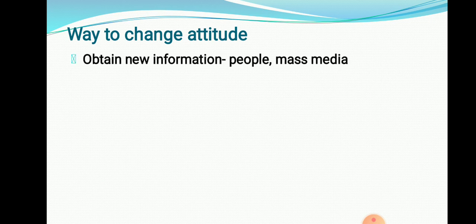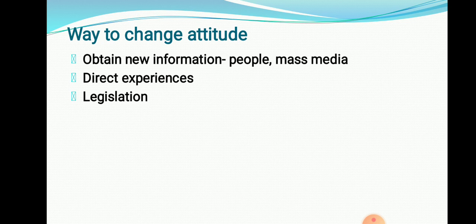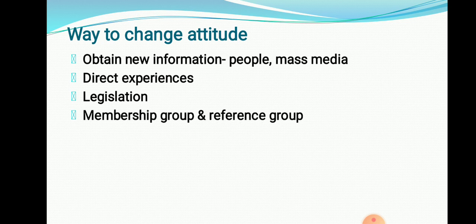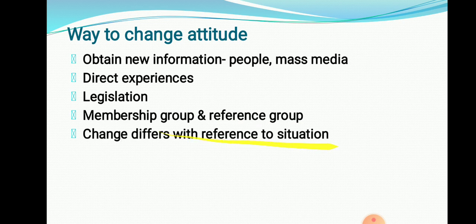Now, the ways to change attitude. By obtaining new information from people or from mass media — television, newspaper, magazines, books — we are able to change the attitude. Direct experience with a particular object, situation, or person. Legislation — laws and orders — also forms attitude. Membership of a group and reference group: if you become a member of a particular group or refer to a particular person, your attitude is going to be changed. These are the ways by which we are able to change the attitude of the people.